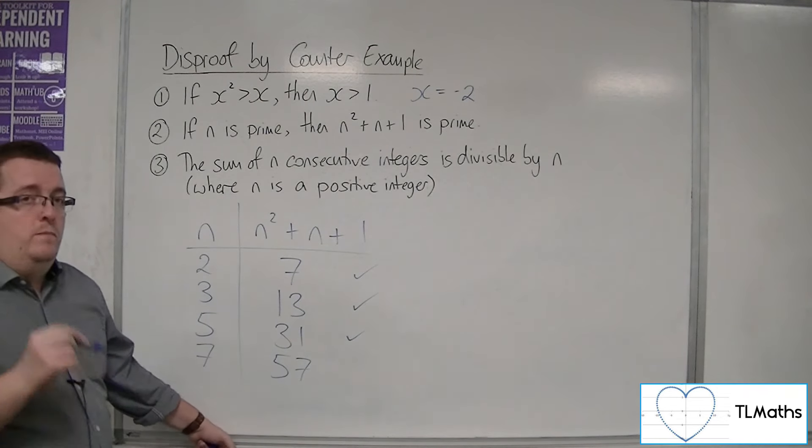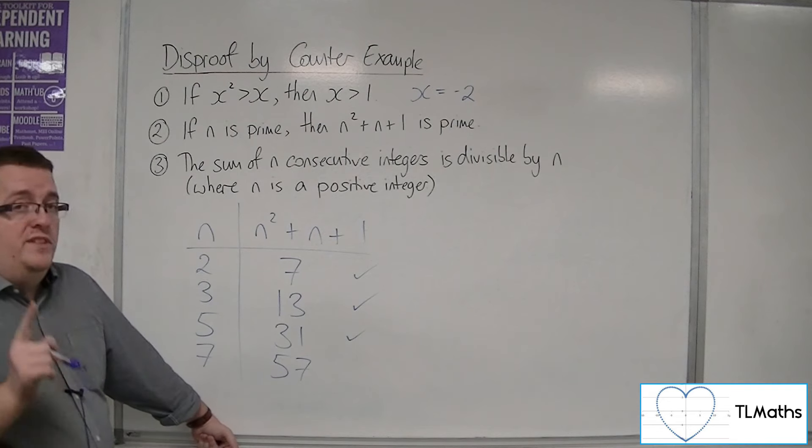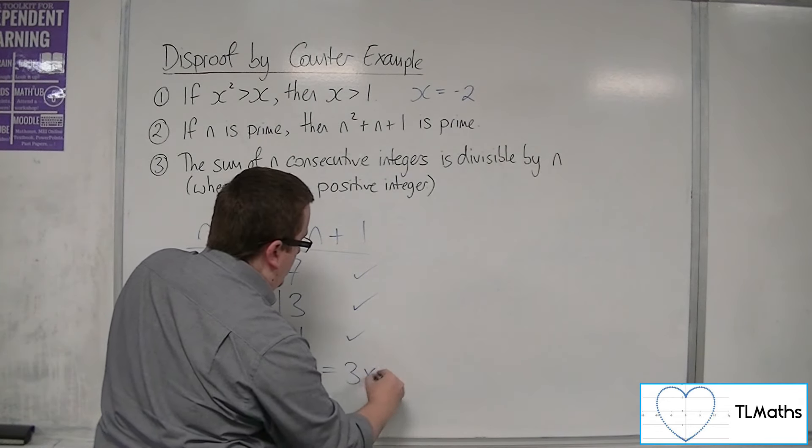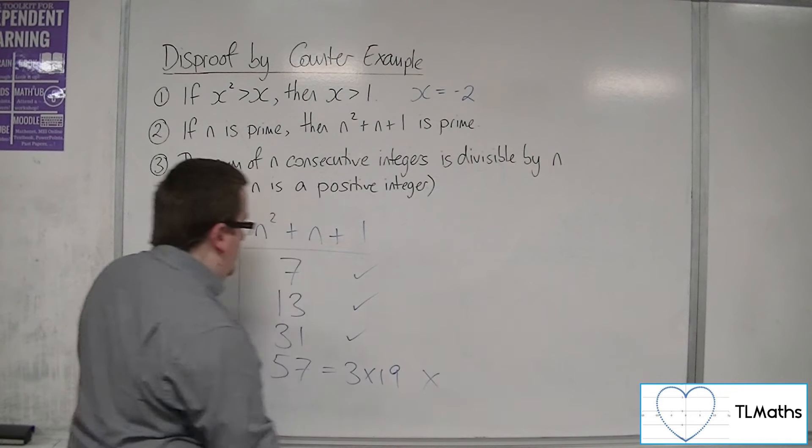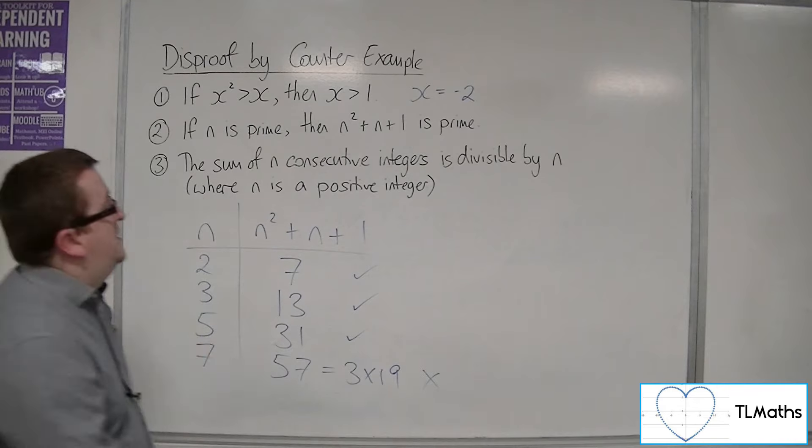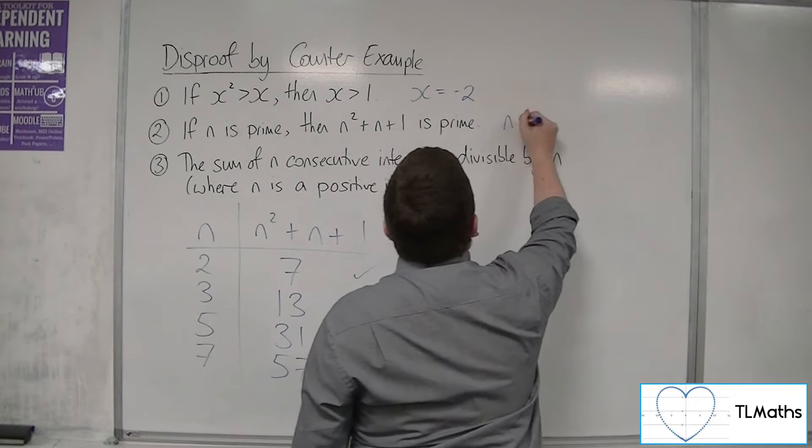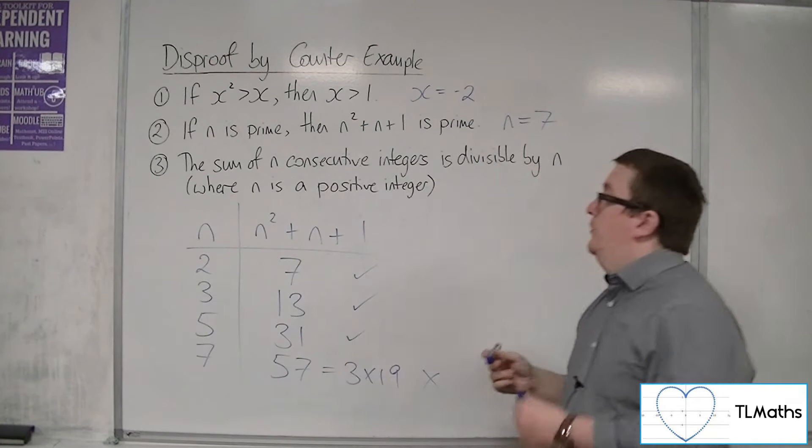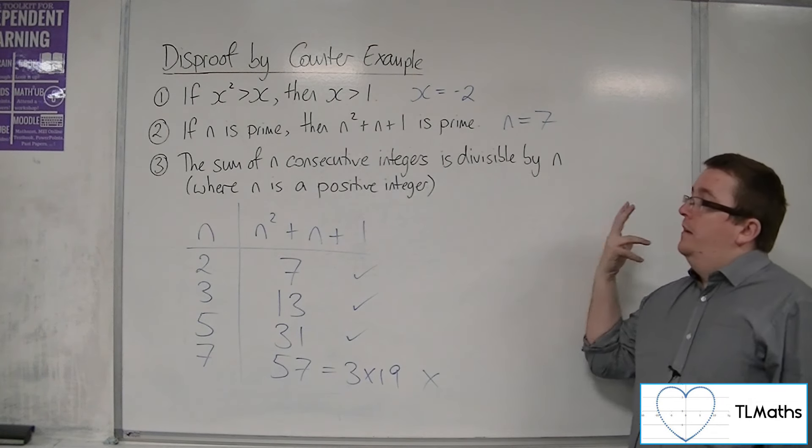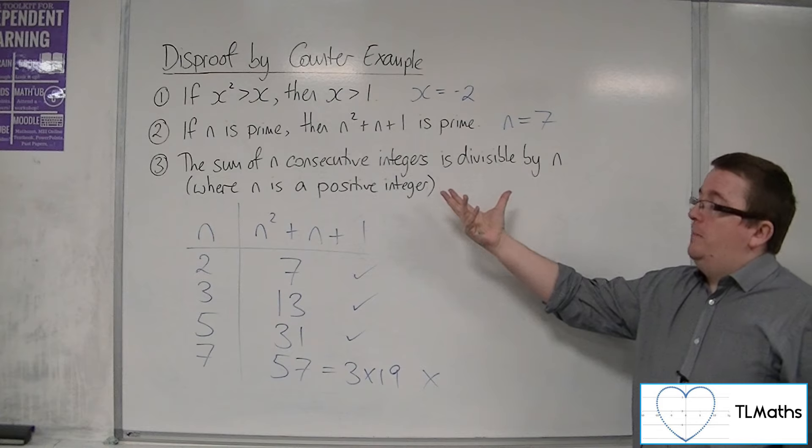Now is 57 prime? Well, no, it's not. Because 57 is 3 times 19. So if n is 7, this statement, number 2, fails. So we found a single counterexample where the conjecture number 2 fails.